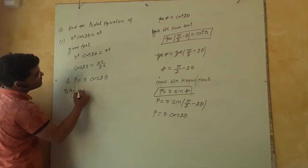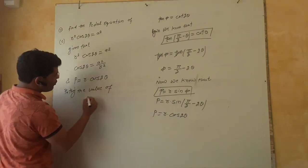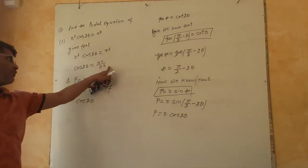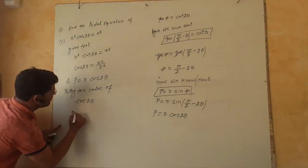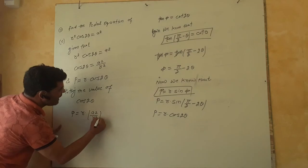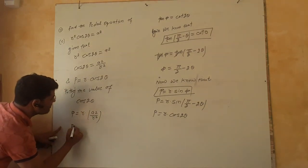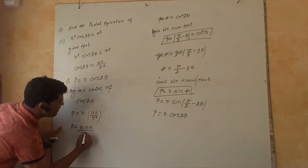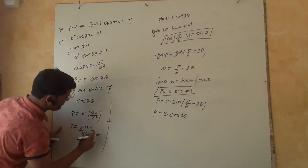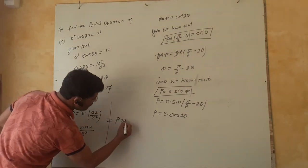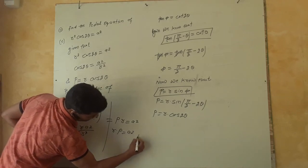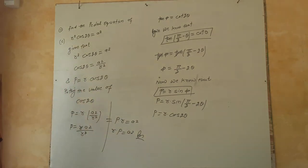From the given equation R squared cos 2θ equals A squared, we get cos 2θ equals A squared upon R squared. Substituting into P = R · cos 2θ, we get P = R · (A squared / R squared), which simplifies to P = A squared / R. Therefore PR equals A squared. This is the required pedal equation.